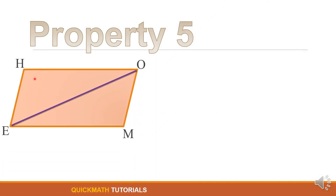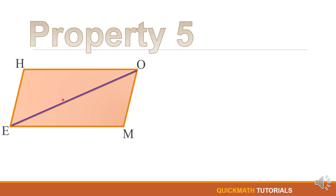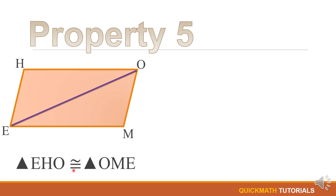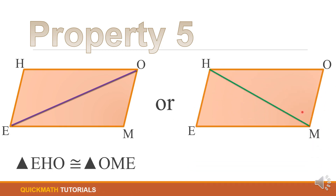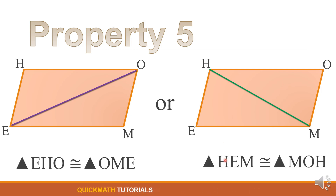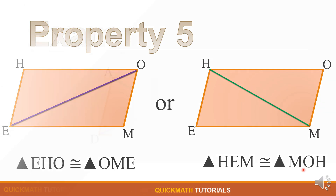In the figure, suppose we have parallelogram HOME and diagonal EO — this diagonal cuts the parallelogram into two congruent triangles: triangle EHO is congruent to triangle OME. Similarly, using diagonal HM, it divides the parallelogram into two congruent triangles: triangle HEM is congruent to triangle MOH.